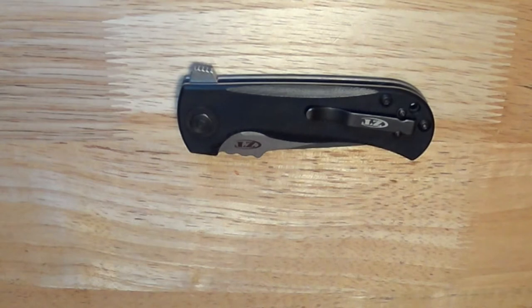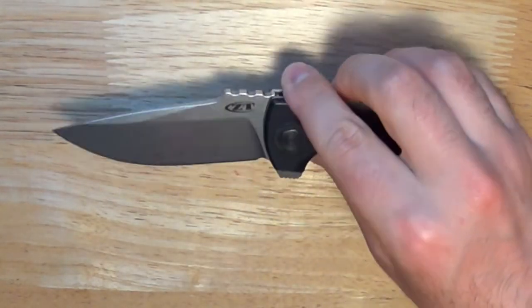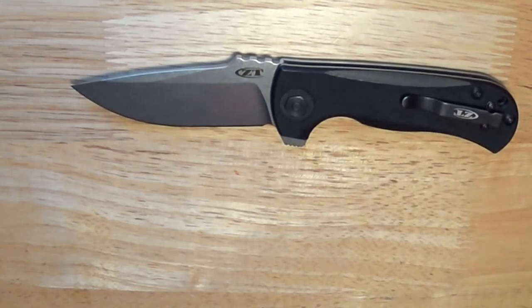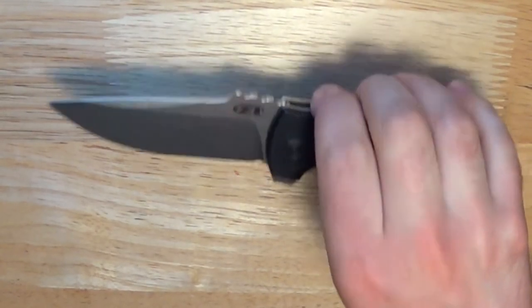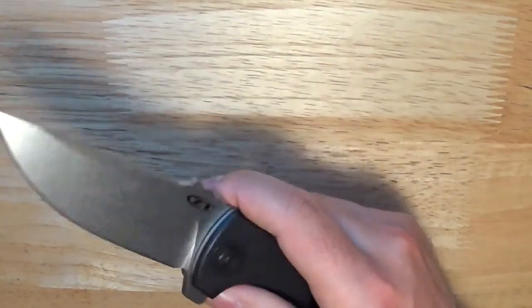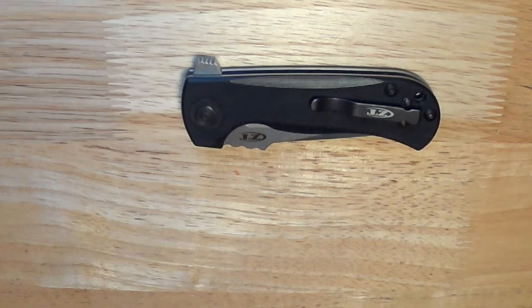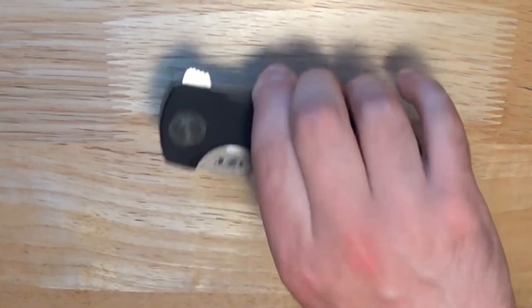The 909 has a 3.8 inch S30VN blade. It's a drop point, 0.156 inch thick. The knife is 8.5 inches overall, and when it's closed, it's 4.75 inches. The total weight of the knife is 7.5 ounces, and the cost is $180.